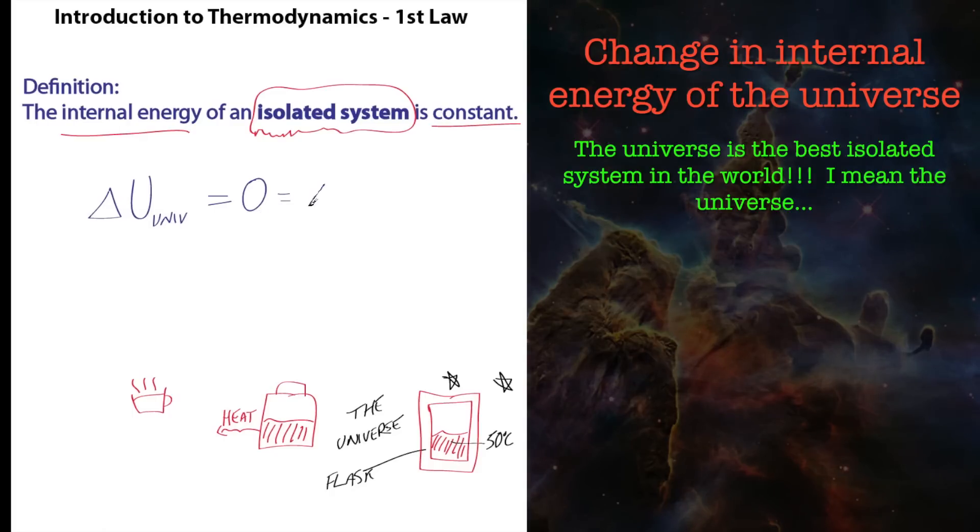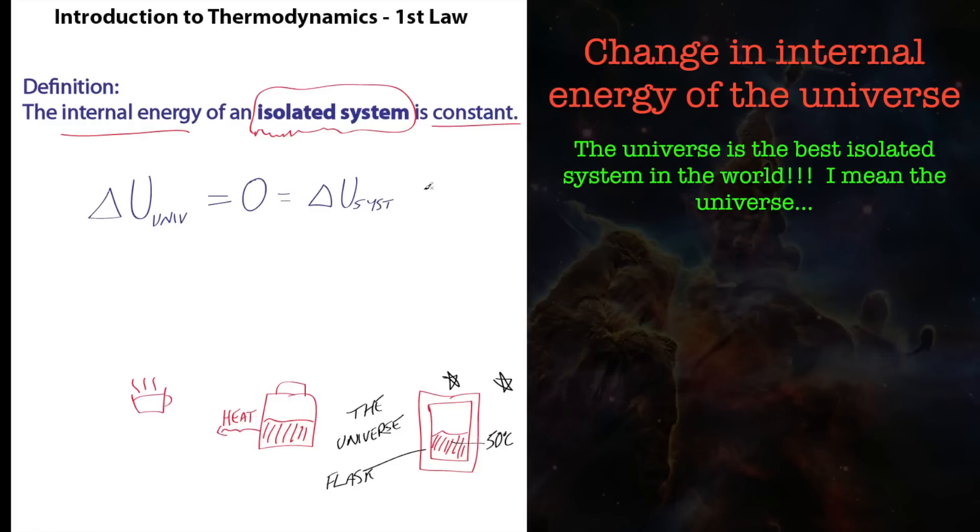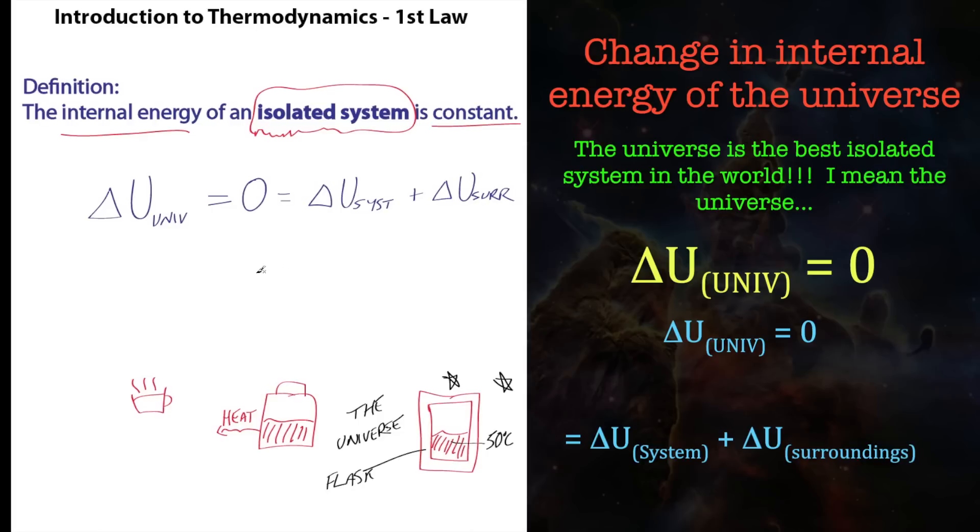That means the change in internal energy of our system of interest plus change in internal energy of our surroundings equals zero. So that means the change in internal energy of our system equals the negative change in internal energy of the surroundings. There's always going to be something changing to compensate the change in energy.